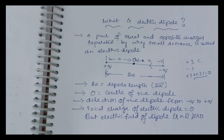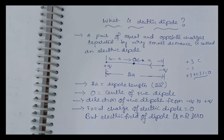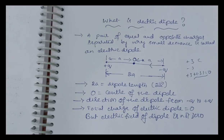So, to summarize: an electric dipole is a pair of equal and opposite charges separated by a very small distance.